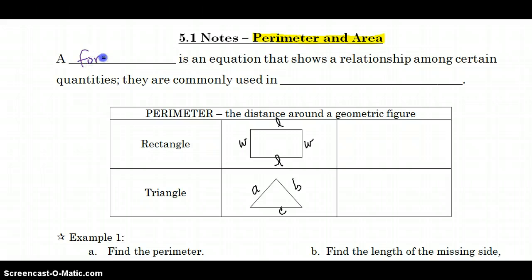A formula is an equation that shows a relationship among certain quantities. They are commonly used in geometry. So below in our first box, we're going to talk about perimeter. The perimeter of a rectangle is just the distance around the rectangle. So you would add the width plus the length plus the width plus the length. We know from grouping like terms that means we have two W's and two L's. So the perimeter of a rectangle is typically written twice the width plus twice the length. The perimeter of a triangle is going to be A plus B plus C equals the perimeter of a triangle.